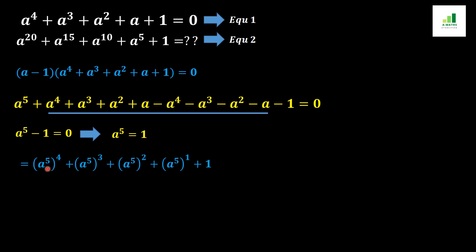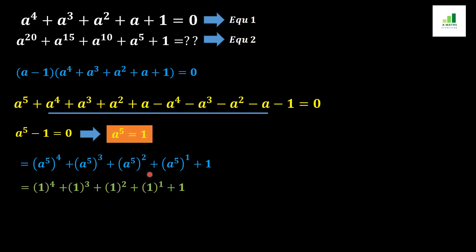Since a to the power 5 equals 1, we replace every (a to the power 5) with 1. This gives us 1 to the power 4 plus 1 cubed plus 1 squared plus 1 plus 1. Adding these values together: 1 plus 1 plus 1 plus 1 plus 1 equals 5. So the answer to equation 2 is 5.